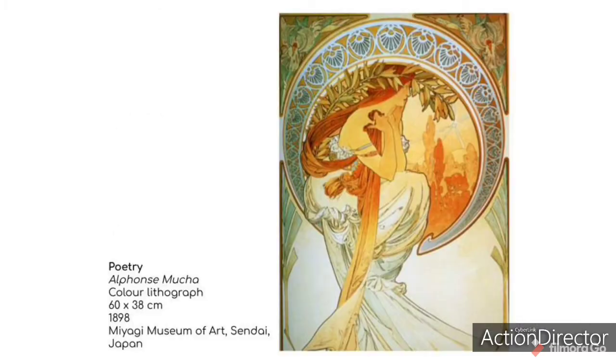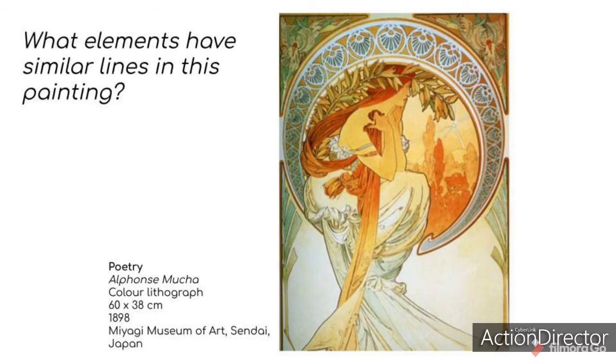This piece is called Poetry. It's a color lithograph by Alphonse Mucha, made in 1898. What elements have similar lines in this painting? I found similar curved lines in the dress.